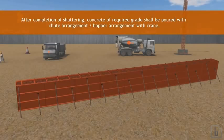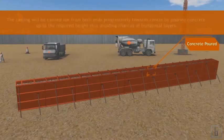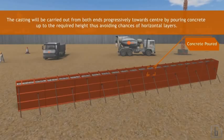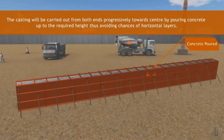After completion of shuttering, concrete of required grade shall be poured with chute arrangement and hopper arrangement with crane. The casting will be carried out from both ends progressively toward center by pouring concrete up to the required height, thus avoiding chances of horizontal layers.